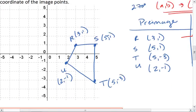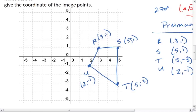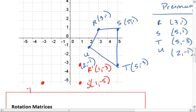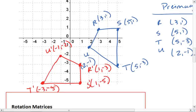So let's map these points now. R prime is 1, negative 3. S prime is 1, negative 5. T prime is negative 3, negative 5. And U prime is negative 1, negative 2. And there is my image.